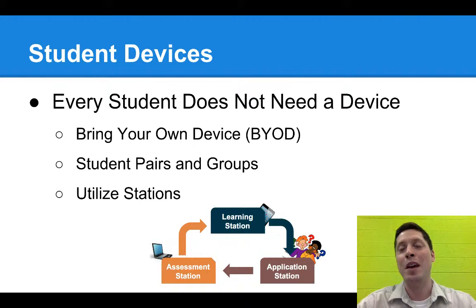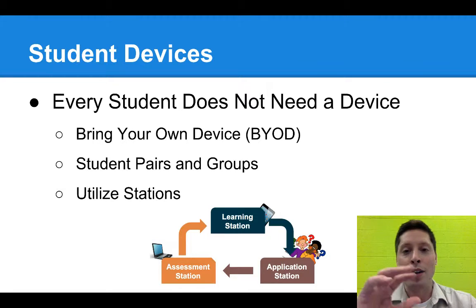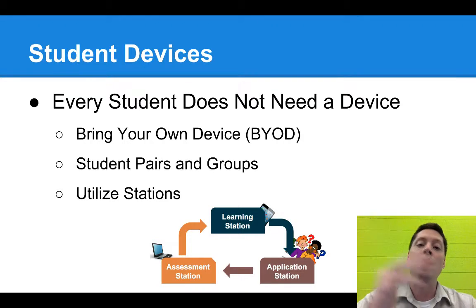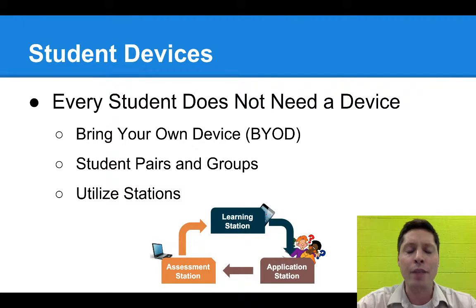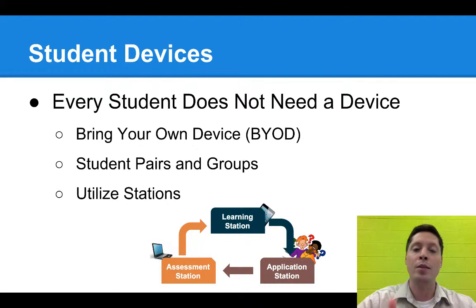Working with a smaller group means you have a better chance of providing more individualized instruction. Then the last station in my model here could be an assessment station, where students move from the learning station, apply their knowledge, and then assess themselves. You could have online assessments where students get instant feedback, and based on the assessment, they know if they should move on to the next lesson or go back to practice or even return to the learning station. Even without technology, you can do that assessment station with a paper-pencil assessment, though students won't get instant feedback.